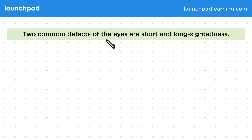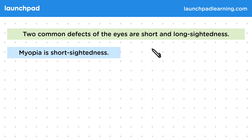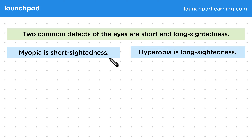Two common defects of the eyes are short and long-sightedness. Myopia is short-sightedness, and hyperopia is long-sightedness.